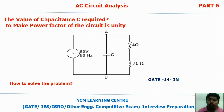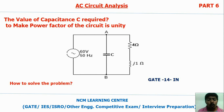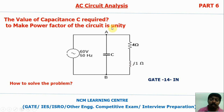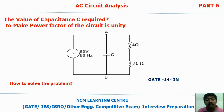Good morning friends. In this part 6 AC circuit analysis video, we are going to discuss how to calculate the capacitance value to make the power factor of the circuit unity. For example, if capacitance is not present in the circuit, the power factor will not be unity. If some amount of capacitance is added between terminals a and b, the power factor becomes unity.